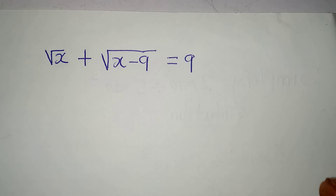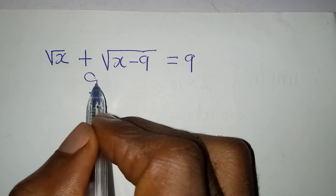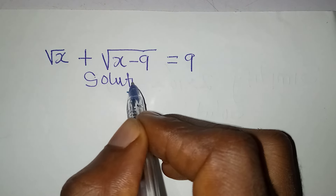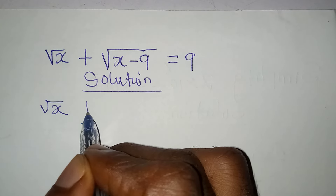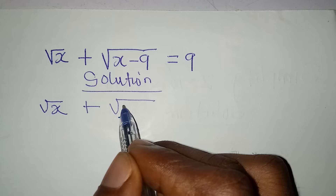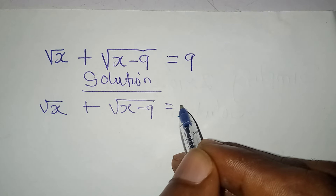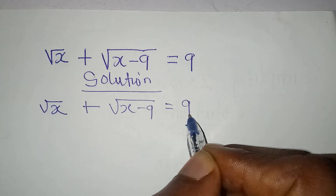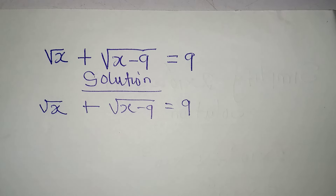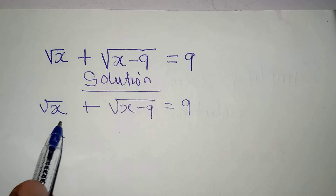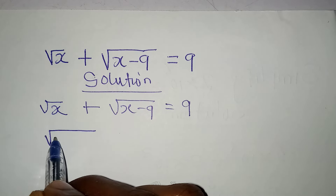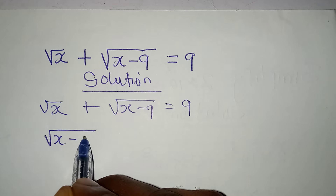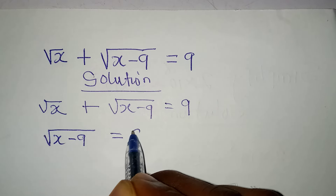Let's solve this problem. We have square root of x plus square root of x minus 9, equal to 9. This is very simple. The first step is to take the square root of x to the other side, so we have square root of x minus 9 equal to 9 minus square root of x.